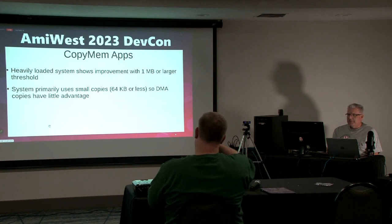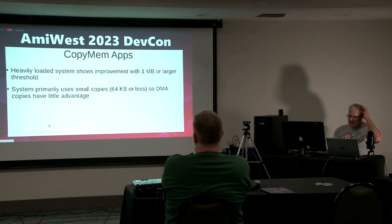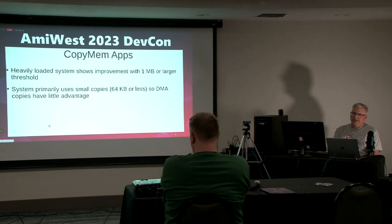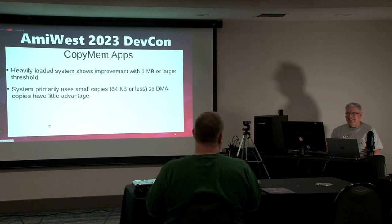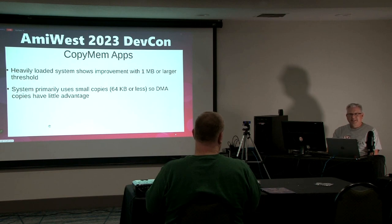Looking at a real-world scenario, one hope was that on a heavily loaded system, it should be able to offload copies to the DMA engine. That does work, but your DMA copies need to be about 1 MB or larger before you really notice it — fairly large copies. This connects to what Harold talked about: the file system was limiting his copies to 128K. We need to get his copies up to 1 MB or larger to use the DMA engine effectively. In AmigaOS, unfortunately, every time you load, edit, or save a file, it gets copied multiple times, so the faster we make copies, the faster the system runs.